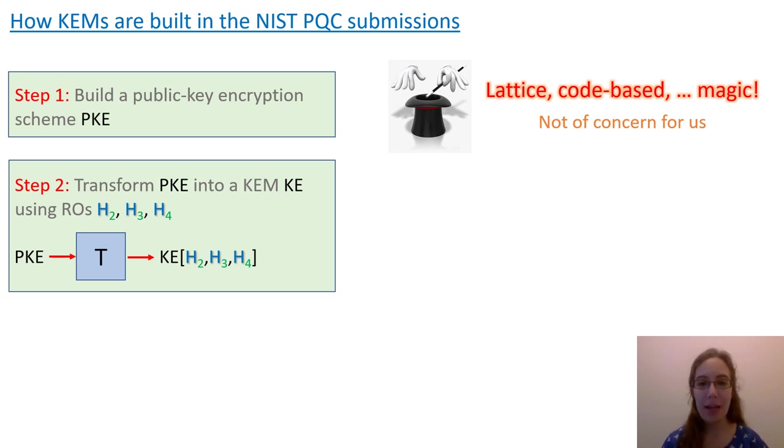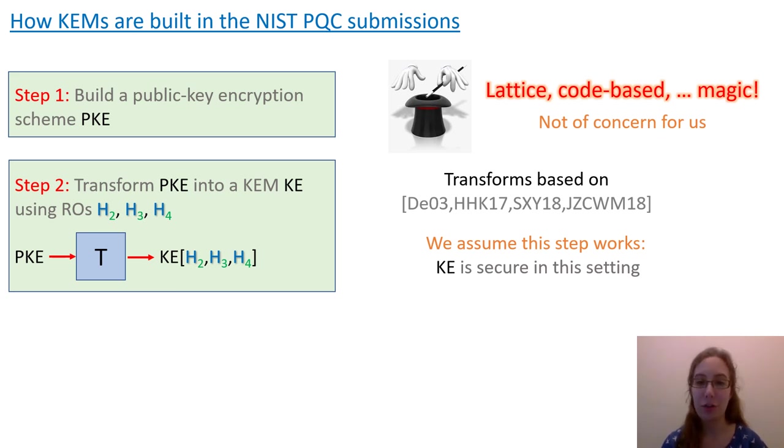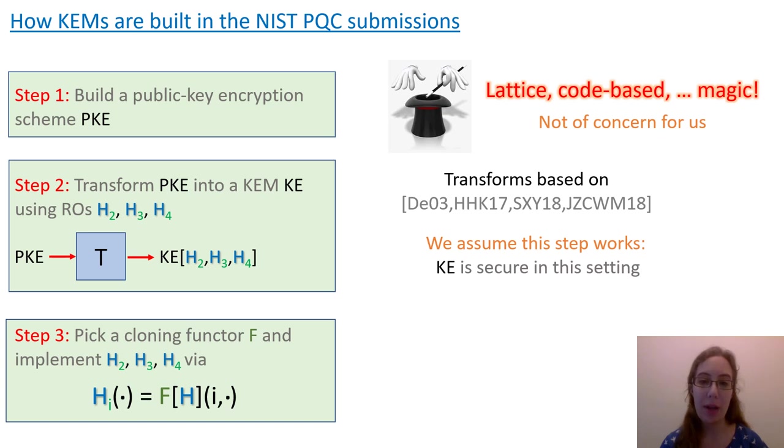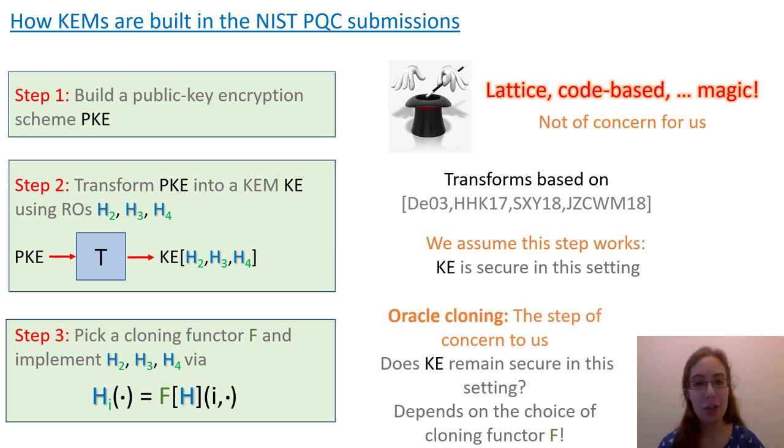Next, in step two, PKE is turned into a KEM by the application of a generic transform. This transform, and the constructed KEM, uses multiple, here up to three, independent random oracles. We name them H2, H3, and H4 because we reserve H1 for possible use by PKE. The transforms are based on ones given and validated in the literature. They're not always identical to the ones in the literature, but we assume they work in the sense that KE is secure in this setting. It's important to remember that this means, under the assumption, that H2, H3, and H4 are independent random oracles. Finally, in step three, the many ROs are implemented via a single one H through some cloning functor F to get the final KEM. This KEM uses a single random oracle. Our question is whether this final KEM is secure, assuming that the step two one was secure. In other words, we're asking whether the cloning functor was designed well, in a way that preserves security from step two to step three.